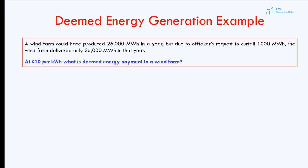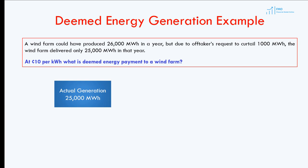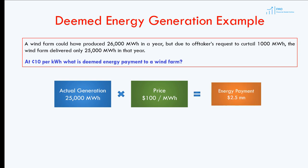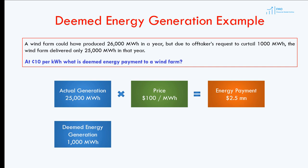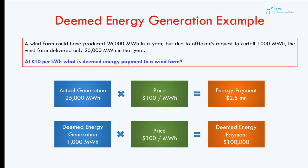Let's review an example of deemed energy generation and payment. Suppose a wind farm could have produced 26,000 MWh in a year, but due to the off-taker's request to curtail 1,000 MWh, the wind farm delivered only 25,000 MWh. At $0.10 per kWh, what is the deemed energy payment to the wind farm? The actual generation was 25,000 MWh. The energy price is $0.10 per kWh, which is $100 per MWh, so the energy payment is 25,000 × $100 = $2.5 million. The 1,000 MWh curtailed at the off-taker's request gives deemed energy generation of 1,000 MWh, and 1,000 × $100 = $100,000 deemed energy payment. Since the contract is take-or-pay, the off-taker must compensate the energy seller for the curtailment.